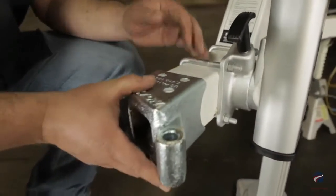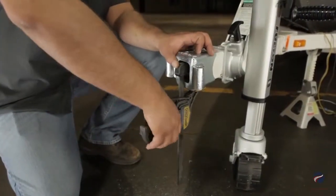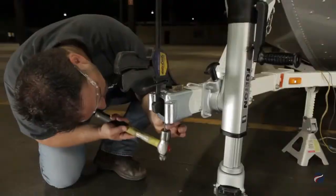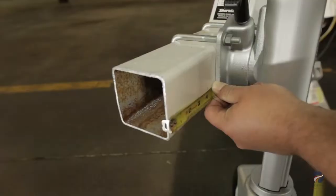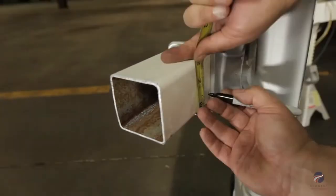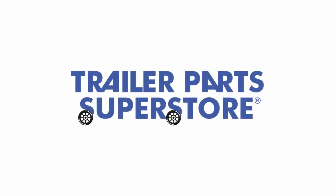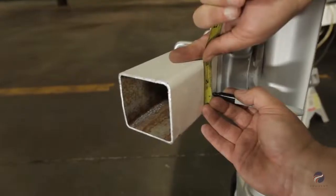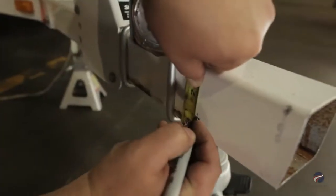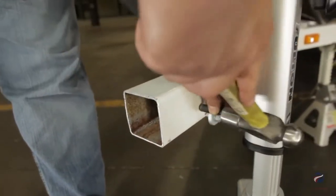Place the male pivot casting over the end of the trailer tongue section. Use a center punch to mark the drill locations. Mark both sides four inches back and one inch up. Use a center punch to mark and drill the locations.